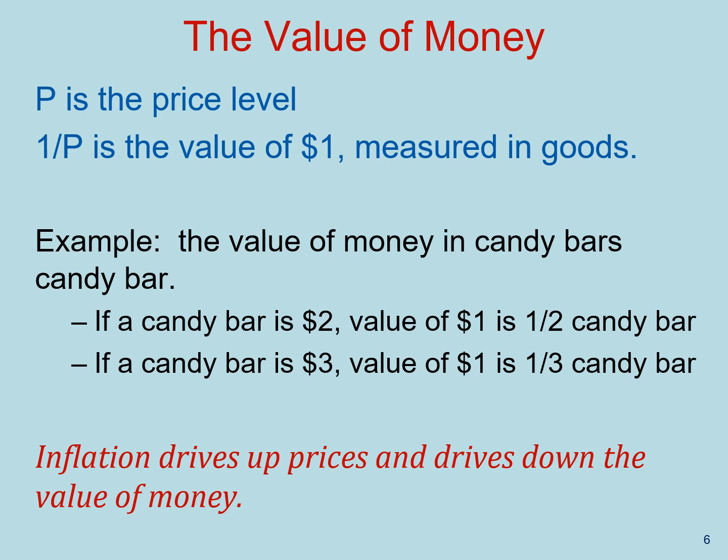To formalize the quantity theory of money, let's first define the value of money. We will use uppercase P for the price level, which could be measured by any of our favorite price indices. The value of one dollar is the amount of goods and services it can buy. If the price of a candy bar is $2, the value of one dollar is one half of a candy bar. If the price of a candy bar is $3, the value of one dollar is one third of a candy bar. Hence, the value of money is one over the price level. From this relationship, we get the result that inflation drives down the value of money.